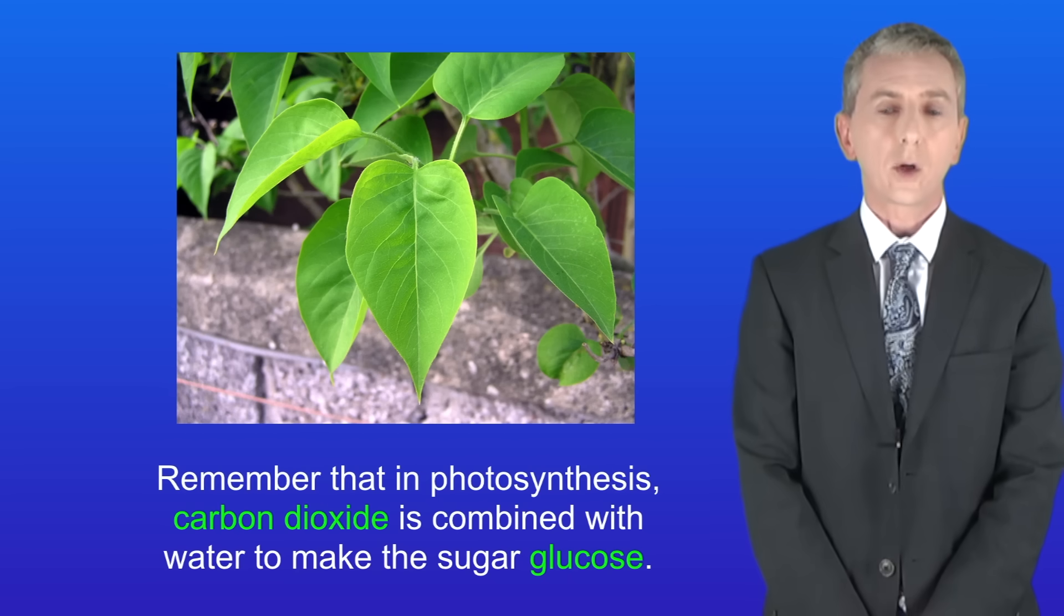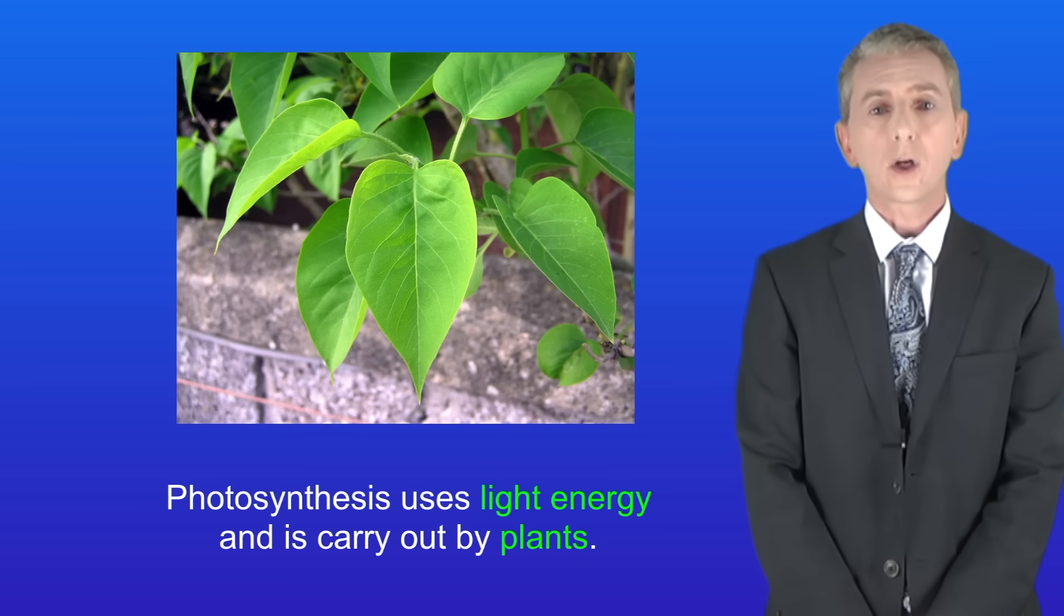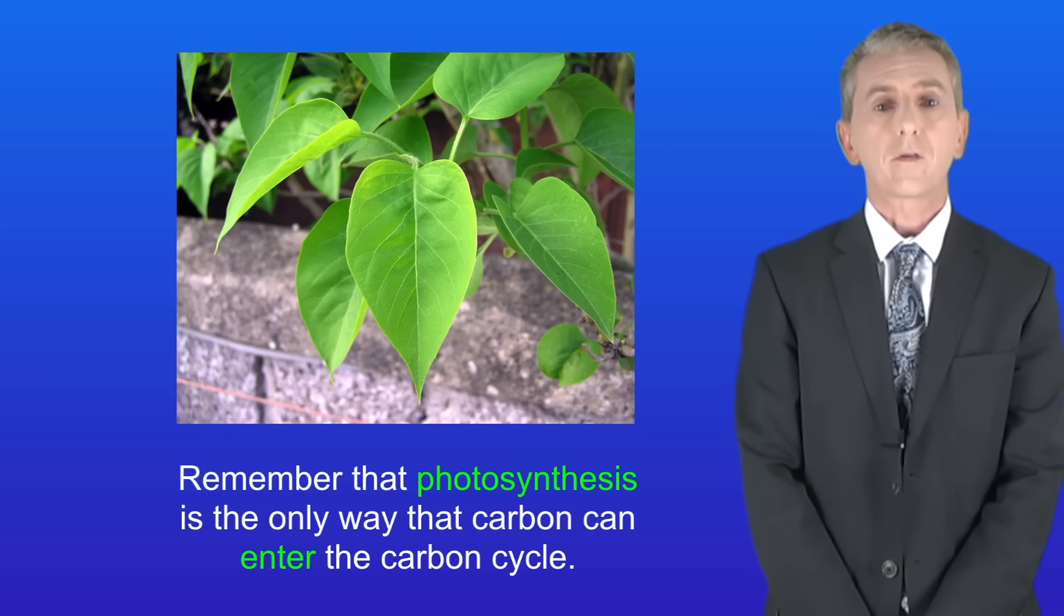Remember that in photosynthesis carbon dioxide is combined with water to make the sugar glucose. Photosynthesis uses light energy and is carried out by plants. So remember that photosynthesis is the only way that carbon can enter the carbon cycle.